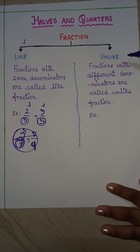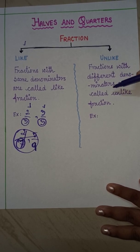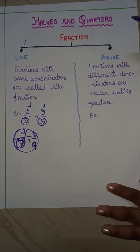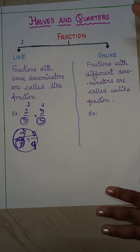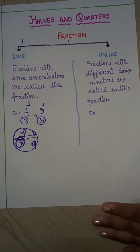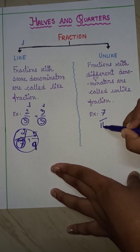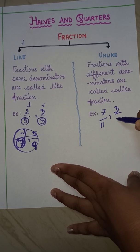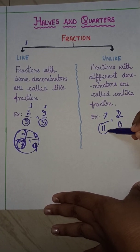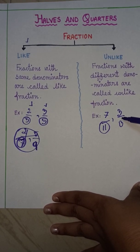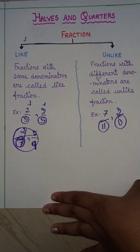So here comes the unlike fraction. What are unlike fractions? Fractions with different denominators are called unlike fractions. When the denominators are different, that type of fraction will be called unlike fractions. For example, if I write 7 by 11 and 3 by 13 — here the denominators are different, 11 and 13 — so these two fractions are unlike fractions.